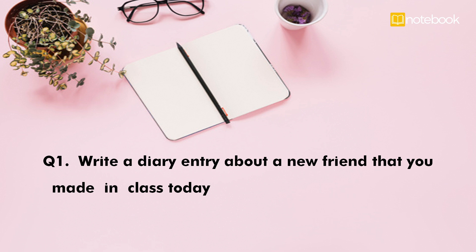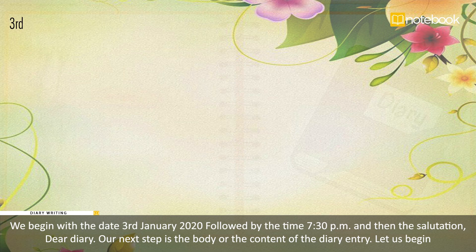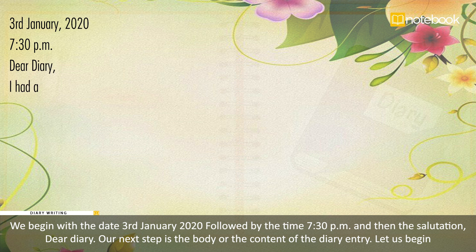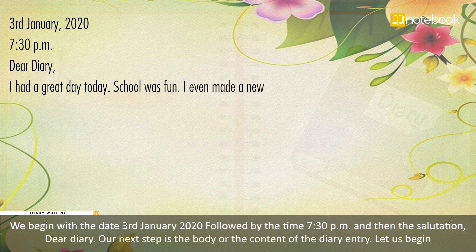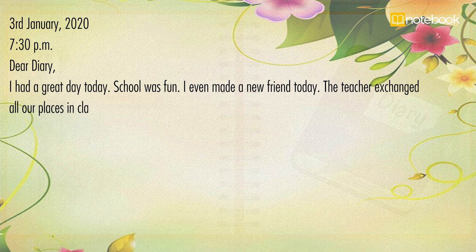Let us now go through an example to clearly understand each step. Question: write a diary entry about a new friend that you made in class today. We begin with the date — 3rd January 2020, followed by the time — 7:30 PM, and then the salutation — 'Dear Diary.' Our next step is the body or the content of the diary entry.